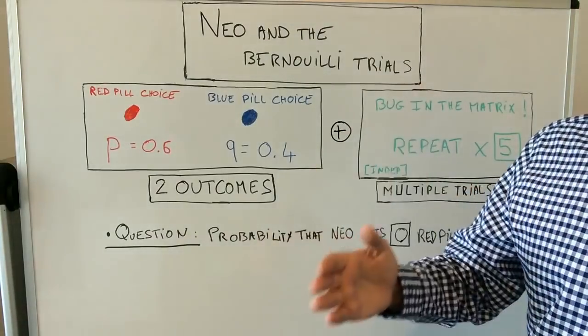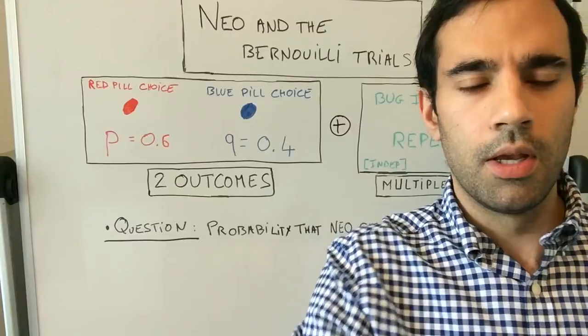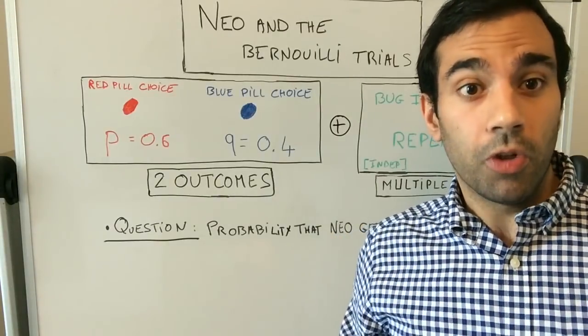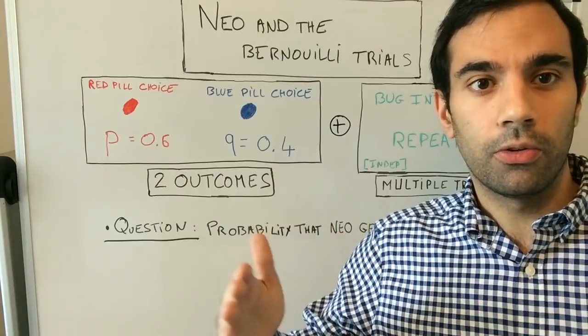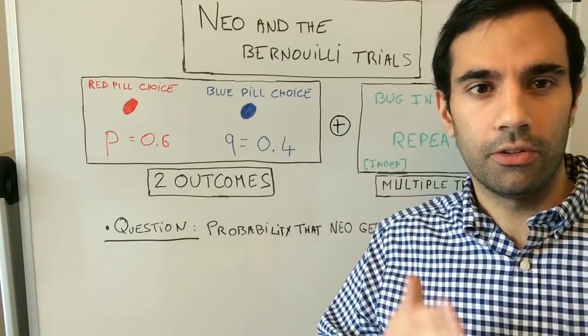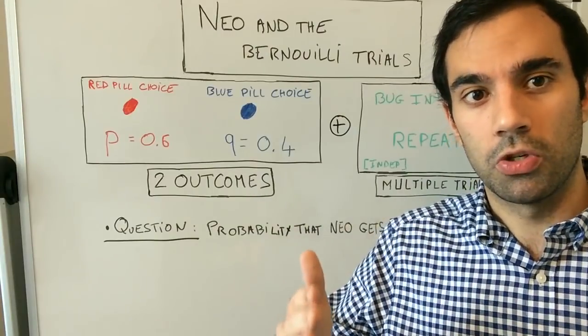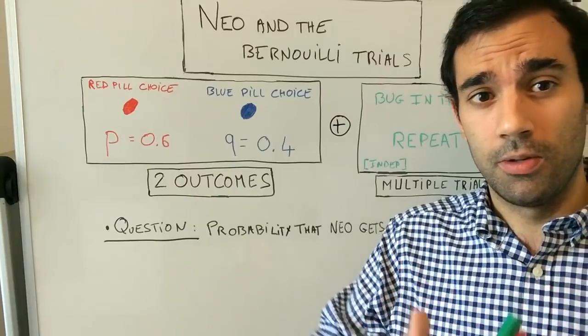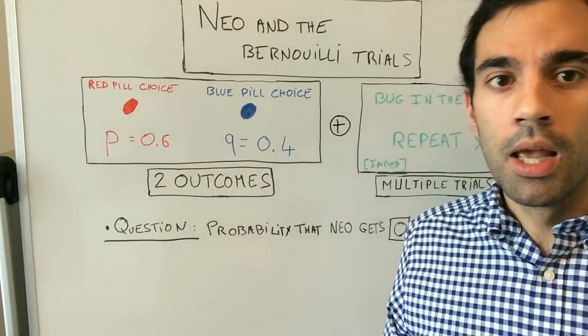Morpheus asks the pill question once, two times, three times, four times, and eventually five times — each time presenting the blue pill choice. Now we'll assume something else: all these questions and answers are independent. If Neo answers the first question, there is no impact on the second question, and so on.